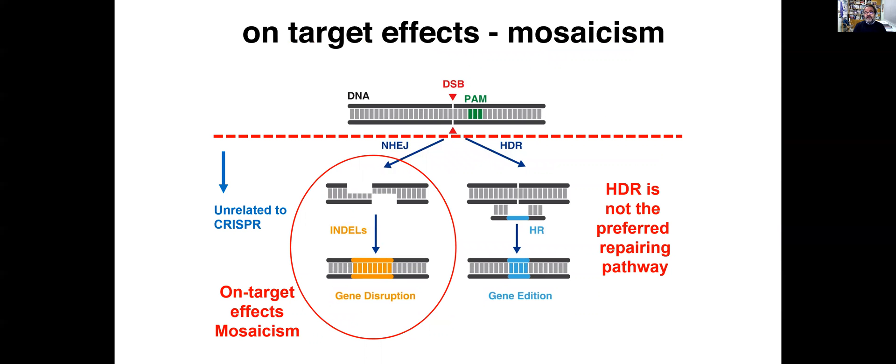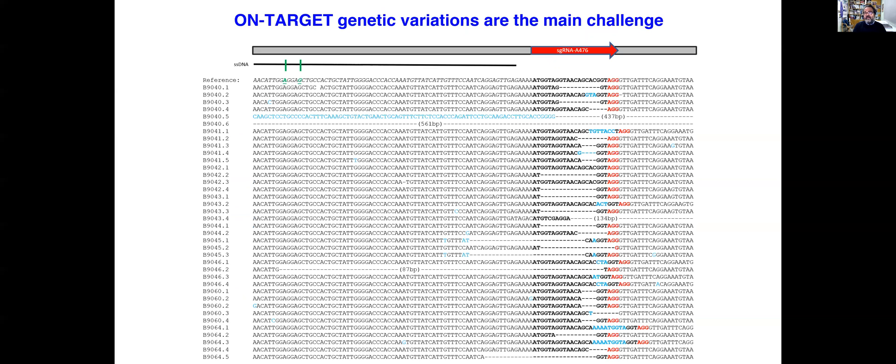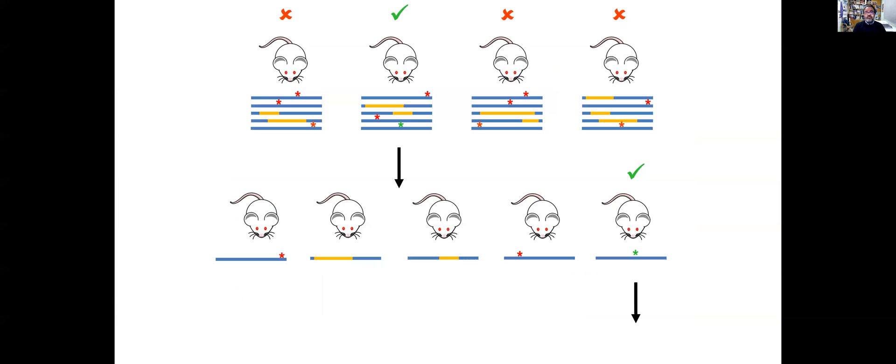The real problem is the on-target effects, the mosaics in which the default pathway, which is the left pathway in which you are adding and removing nucleotides, is progressing randomly. This is generating multiple genetic variants, multiple alleles among which you will find your desired allele. For instance, this is an experiment in which each line is a different mouse. These are mice that have been edited and among which will be the one you are interested in, but there will be many others you are not interested in. This is really the limitation that you have to take into account.